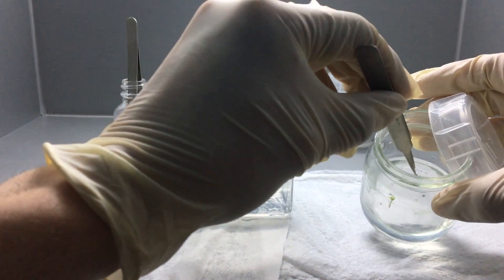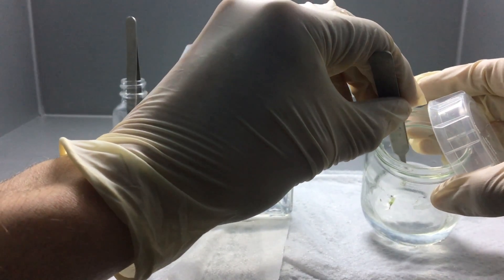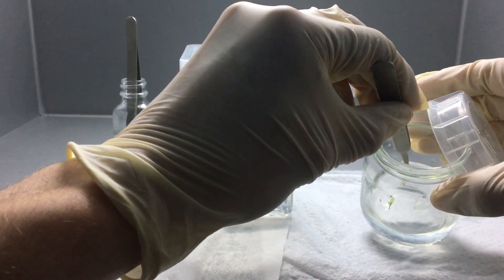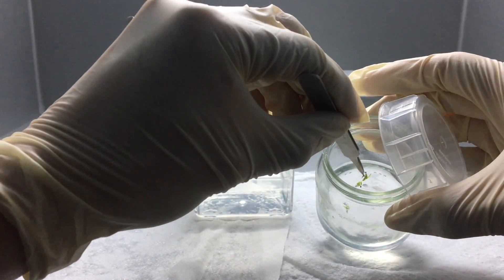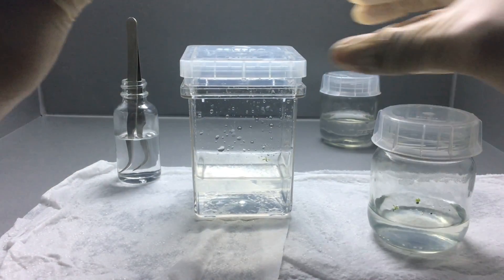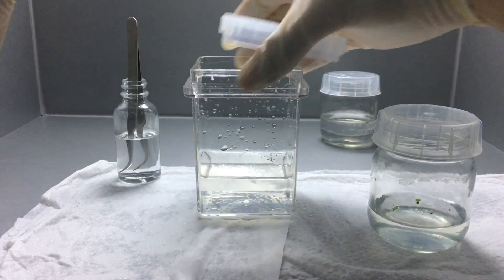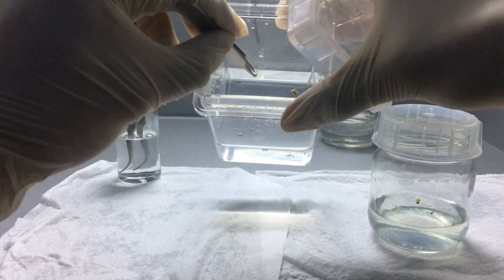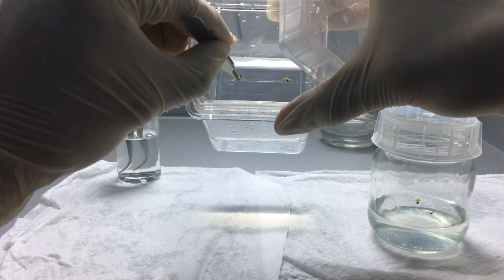I also wanted to keep the leaves above the media because I've noticed when the leaves are growing submerged, sometimes they don't grow normally. I've had my Drosophyllum leaves grow without tentacles until they come up, and then as soon as they break through the surface, they start growing perfectly fine.